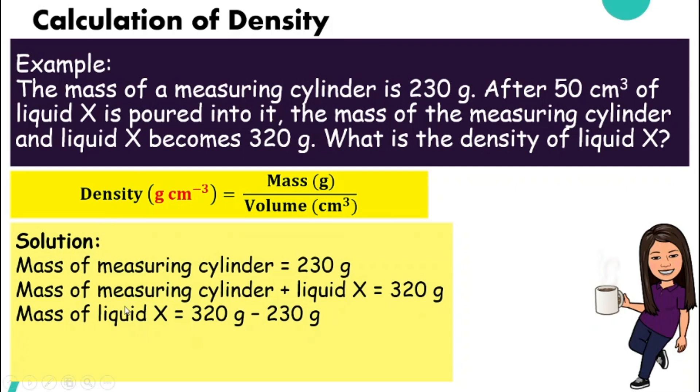So we minus the two. So for the mass of measuring cylinder plus liquid X, 320 grams minus the mass of measuring cylinder, and we will get the mass of liquid X, which gives us 90 grams. So we already have the information here, 90 grams.